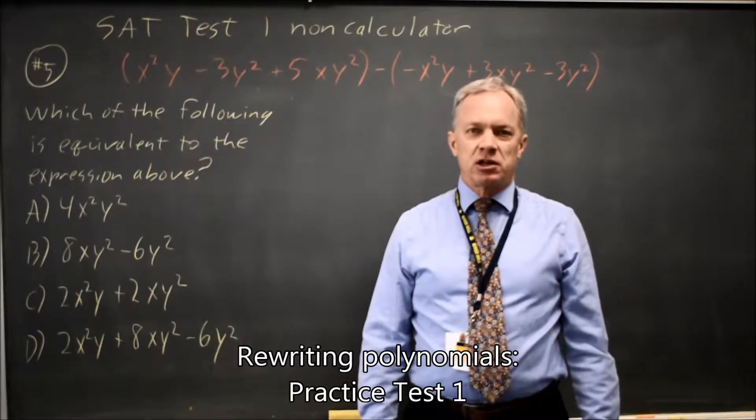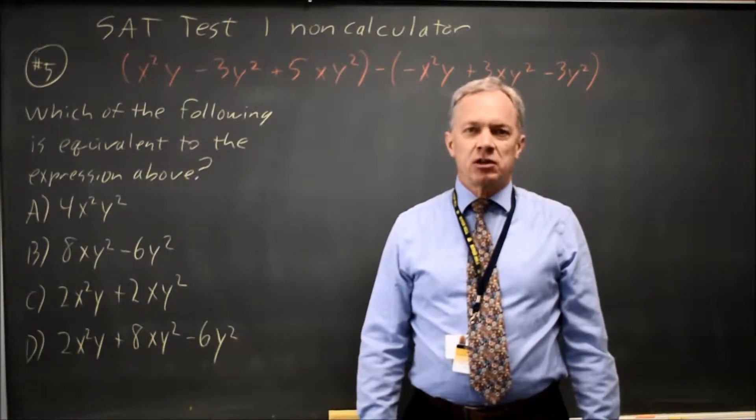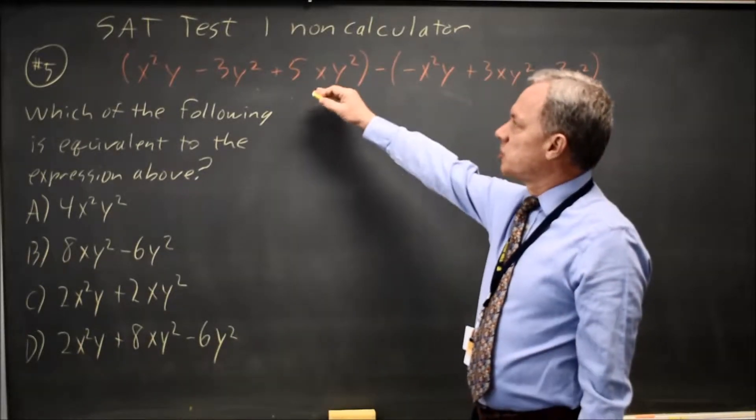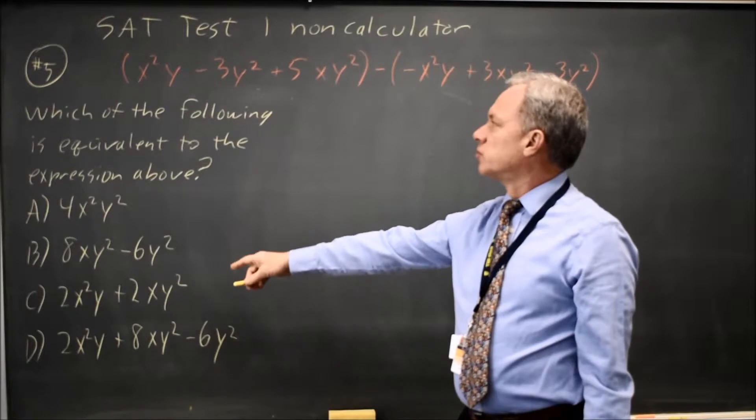This is SAT test 1, non-calculator question number 5. College Board asks us to rewrite a polynomial with two variables, and they give us four choices.